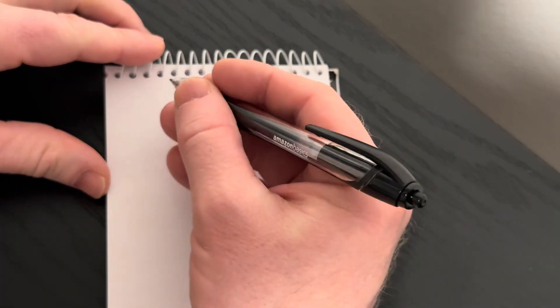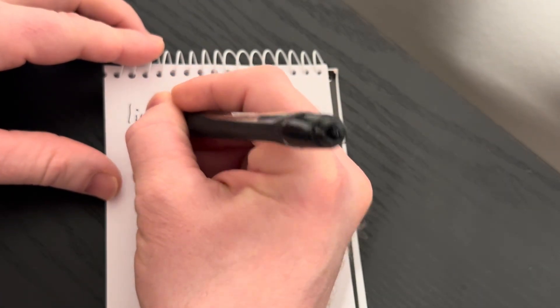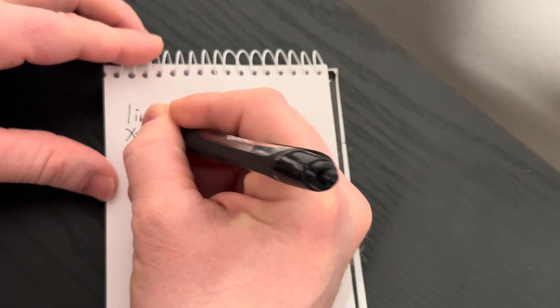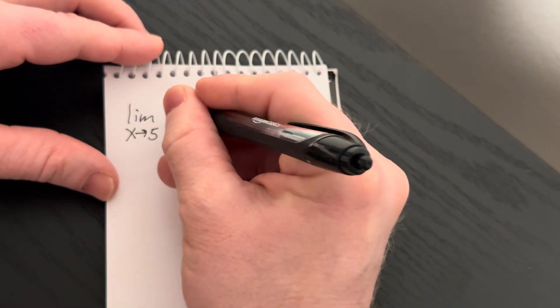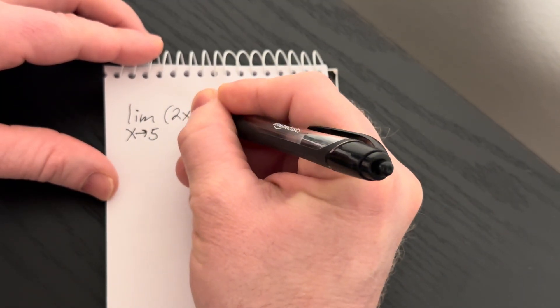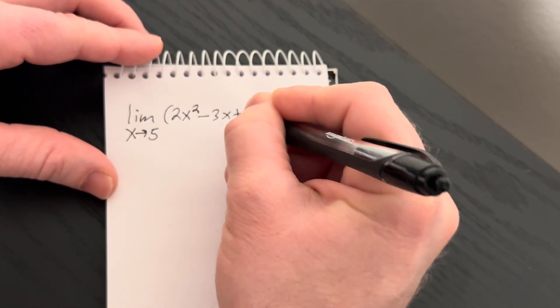All right, we're going to do some math. Let's find the limit as x approaches 5 of 2x squared minus 3x plus 1.